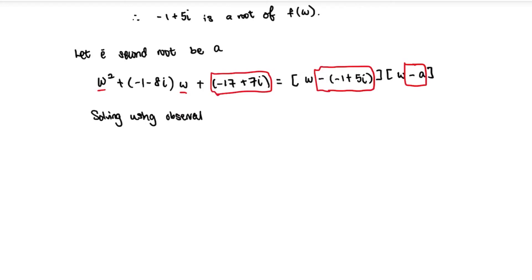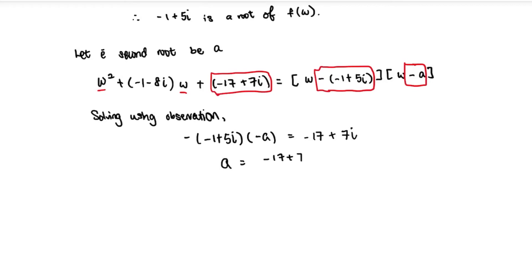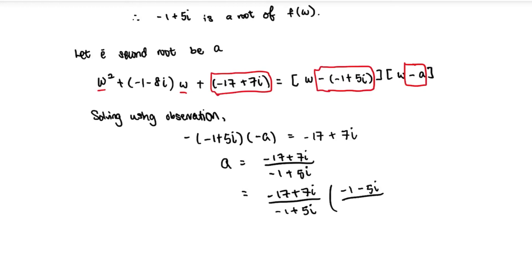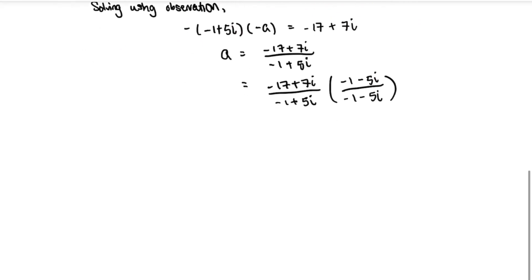Using observation: (−1 + 5i) × (−a) = −17 + 7i. Rearranging, a = (−17 + 7i) ÷ (−1 + 5i). To rationalise, multiply numerator and denominator by the conjugate of the denominator: (−1 − 5i) over (−1 − 5i).